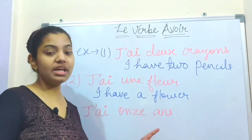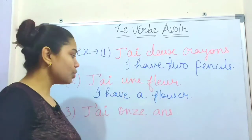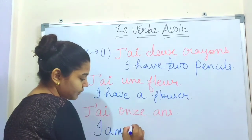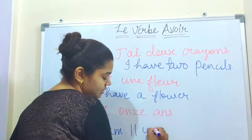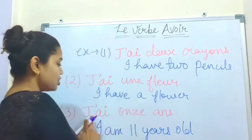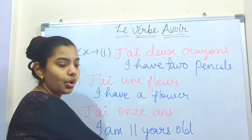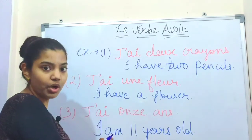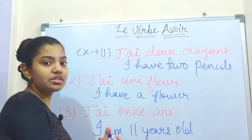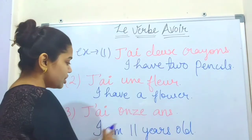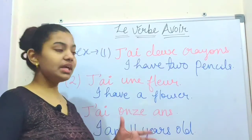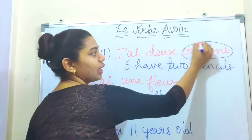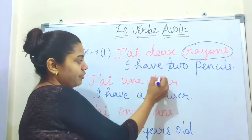Avoir is also used to tell age. If we tell our age or someone else's age, we use avoir. For example: j'ai onze ans means 'I am eleven years old.' Here we translate using 'am' in English, but in French we use avoir — not être. The vocabulary words crayon means 'pencils' and fleur means 'flower' are also useful to note.